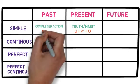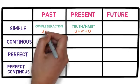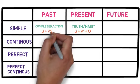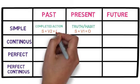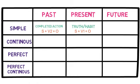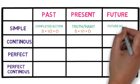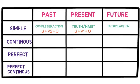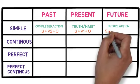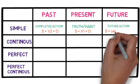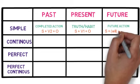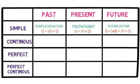The structure of simple past tense is subject plus verb's second form plus object. In the simple future tense, we refer to a future action that will be completed in the future itself. The structure is subject plus will plus verb's first form plus object.